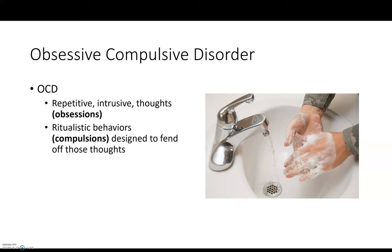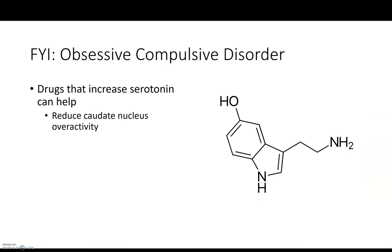Obsessive-compulsive disorder is another anxiety disorder. As the name suggests, it is hallmarked by obsessions and compulsions — and you need to know the distinction between those two. Obsessions are the intrusive thoughts, like thoughts about contamination or things being out of order. Compulsions are the ritualistic behaviors done to fend off those thoughts, like repeated handwashing or excessive organization. As an FYI, serotonin seems to play a role, and the caudate nucleus — part of the basal ganglia — appears to be overactive. Drugs that increase serotonin seem to help.